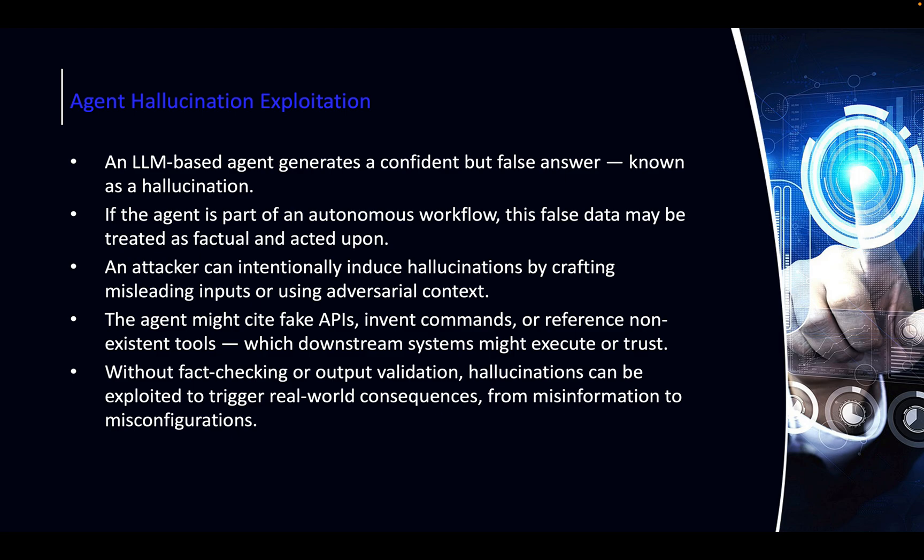Agent Hallucination: this is like misinformation at scale, but far more impactful with agentic systems. If ChatGPT gives you wrong information, there's a disclaimer and nothing really happens. But with agentic AI, a hallucination translates into commands and actions — through MCP services, it will call APIs and other systems. This becomes a much bigger problem than an LLM just lying because it doesn't know something. Agent hallucination is going to be a big issue moving forward.